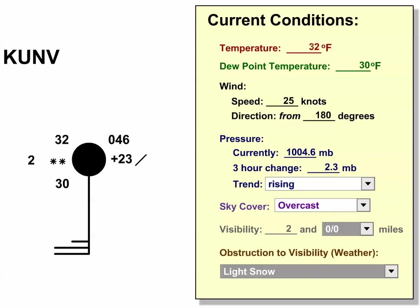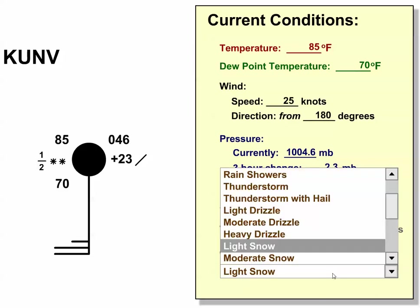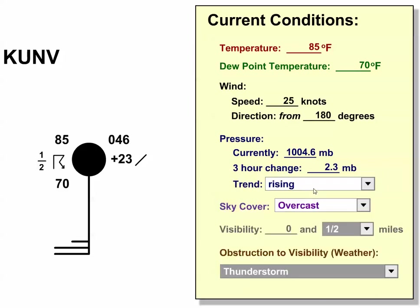This tool is completely interactive, so we can change the weather conditions. We can change the temperature, the dew point, the visibility, and the present weather. So now our temperature is 85 degrees Fahrenheit, our dew point is 70 degrees Fahrenheit, and our visibility is a half mile in a thunderstorm, and we can see the changes on the station model.